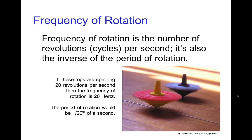If we're talking about cycles per second, in this example, if the tops are spinning 20 revolutions per second, then that's a frequency of 20 hertz. The corresponding period is the inverse of that, so it takes one twentieth of a second to make one revolution.